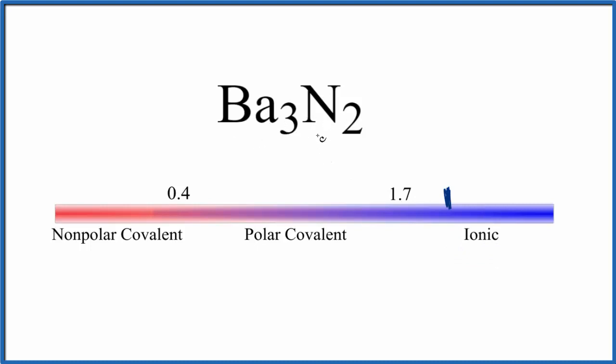Barium nitride would actually be a crystal with repeating formula units of this Ba3N2. This is Dr. B answering the question whether Ba3N2, barium nitride, is ionic or covalent. It's ionic. Thanks for watching.